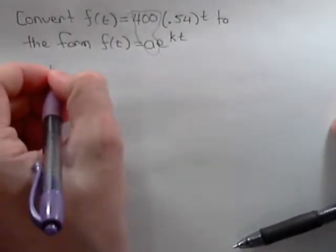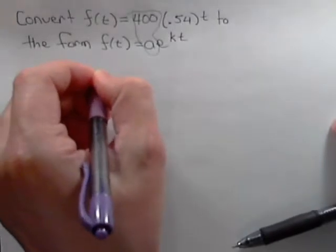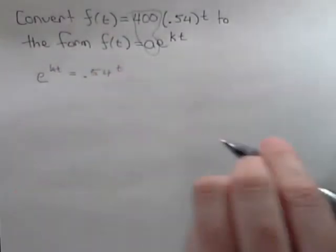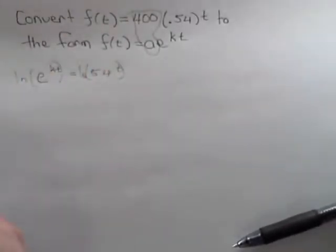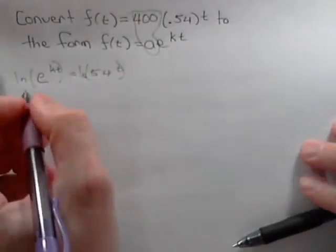Now let's take a look at e^(kt) = (0.54)^t. First I'll probably take the natural log of both sides and doing that, each exponent comes down.